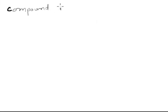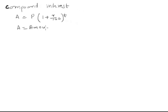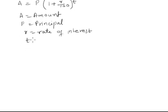Compound interest is calculated using the formula A equals P times 1 plus r over 100 raised to t, where A stands for amount, P stands for principal, r is the rate of interest, and t is the time in years.